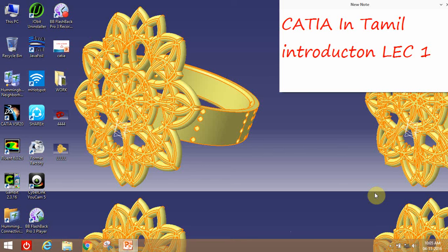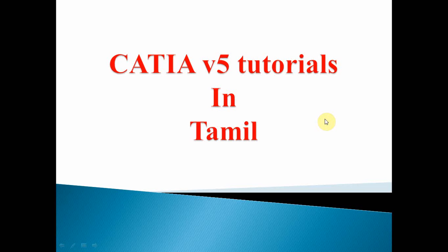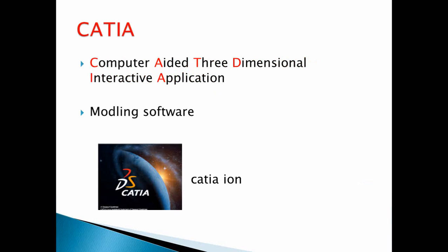Hello everyone, let's go to the CATIA in Tamil. CATIA is a modeling software, mostly used in Aerospace Industries. It is Mechanical Oriented Software. CATIA means Computer Aided 3-Dimensional Interactive Application. In our computer, we use CATIA software.